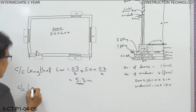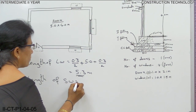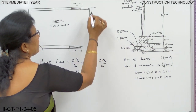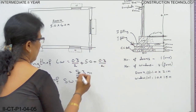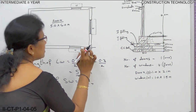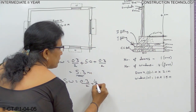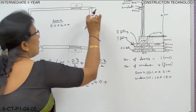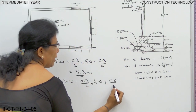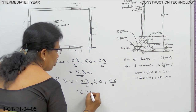Now, centre-to-centre length of the short wall. From here to here we have to take centre-to-centre length of the wall. This is half the width of this wall: 0.3/2, plus from here to here the wall is 4.0 meters, plus half the width of the other wall 0.3/2. Total it comes to 4.3 meters.